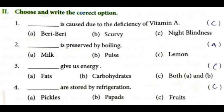Choose and write the correct options. First: night blindness is caused by the deficiency of vitamin A. Second: milk is preserved by boiling. Third: fats and carbohydrates give us energy. Fourth: fruits are stored by refrigeration.